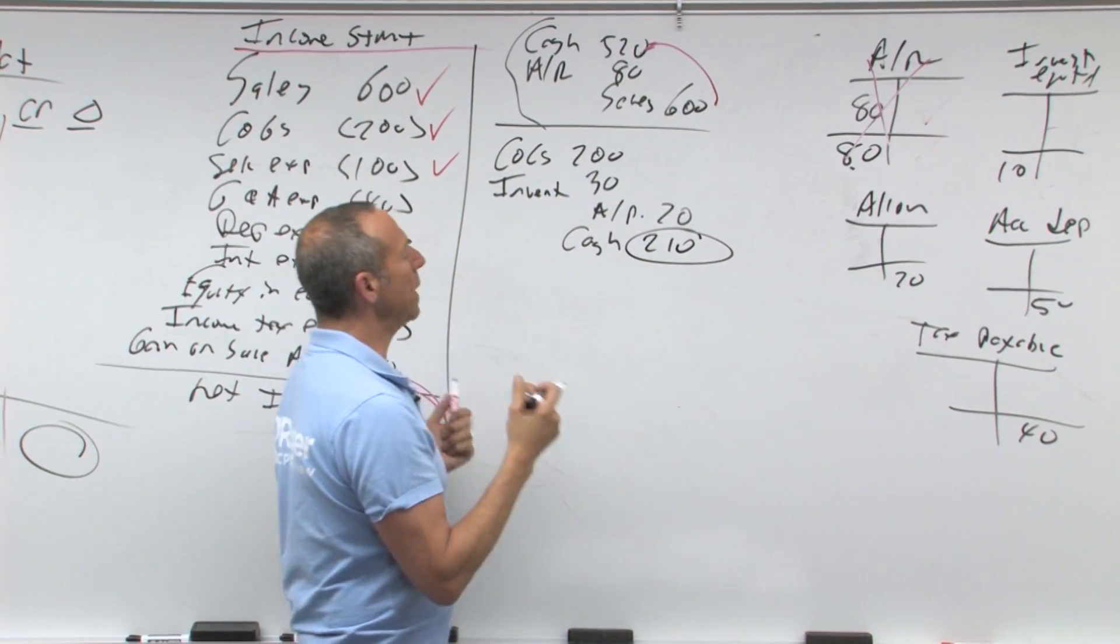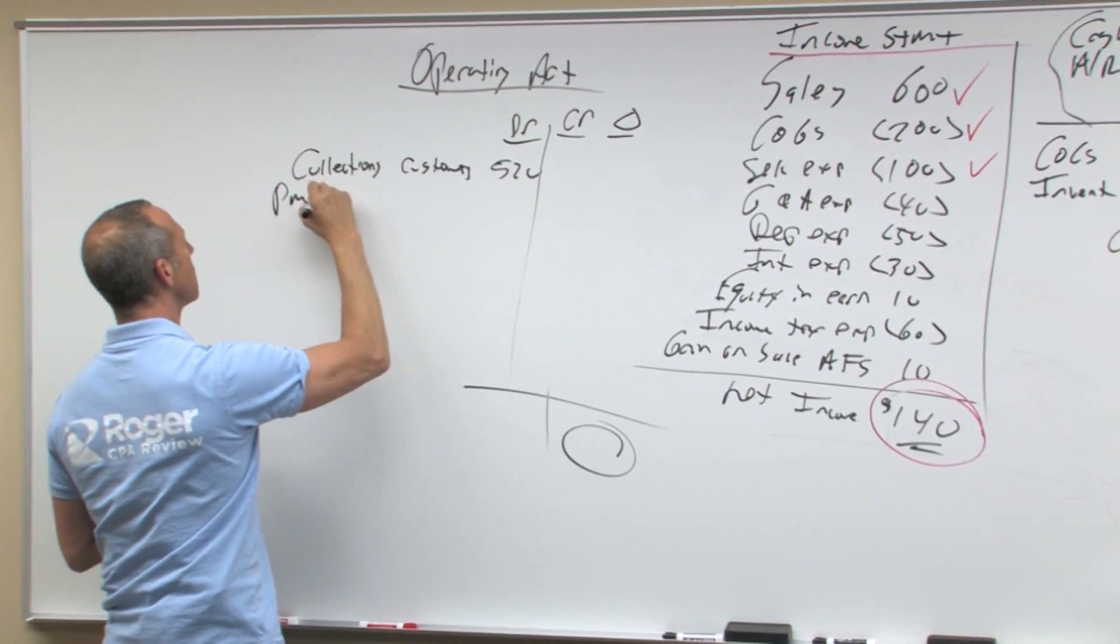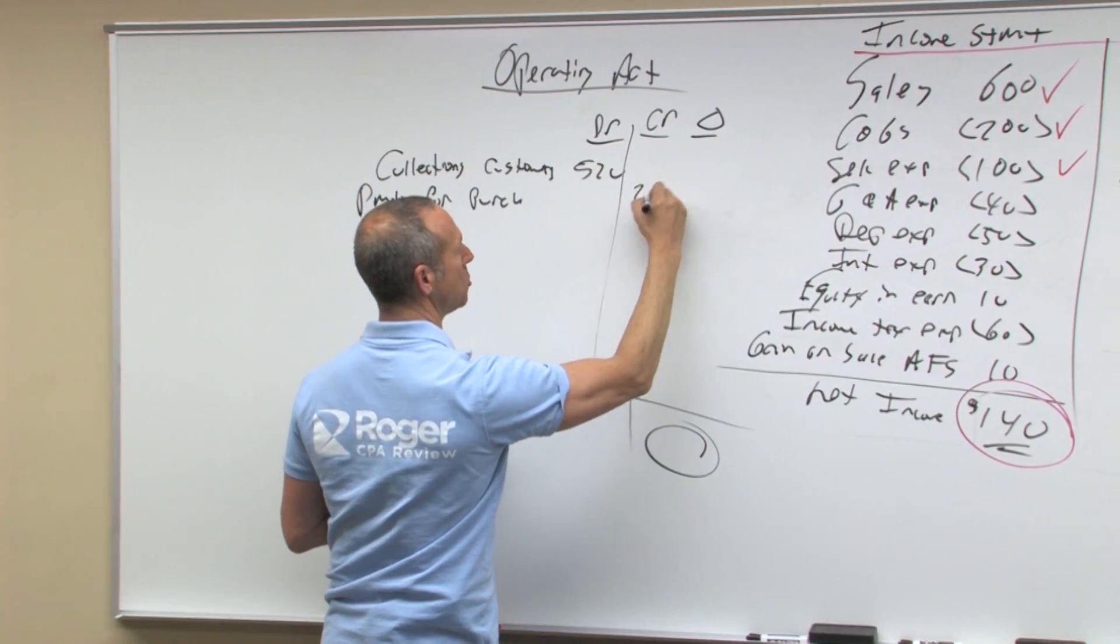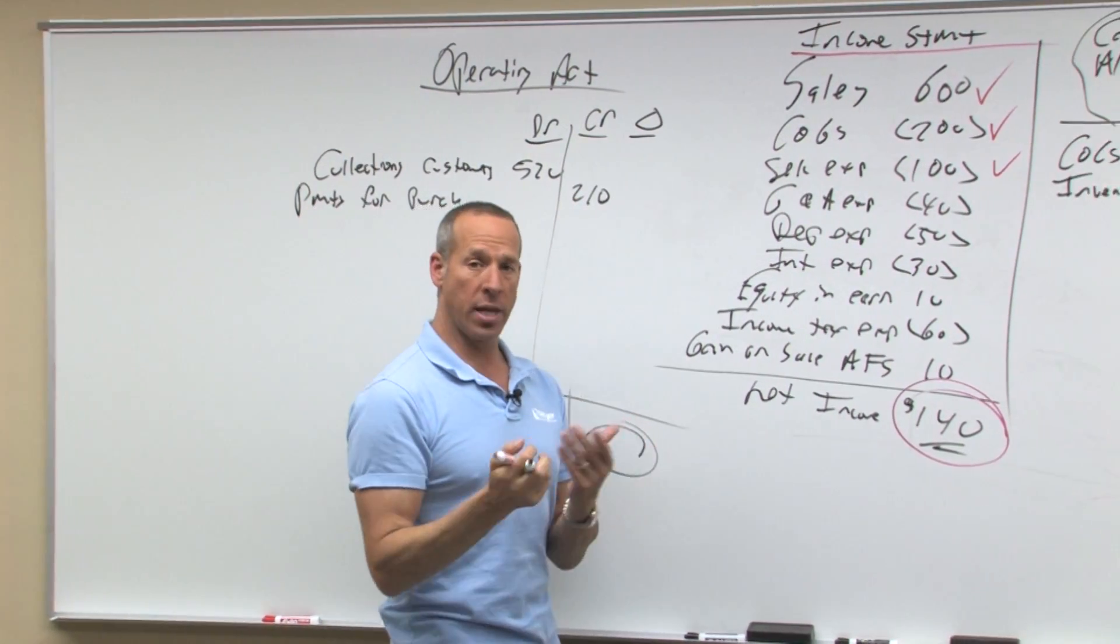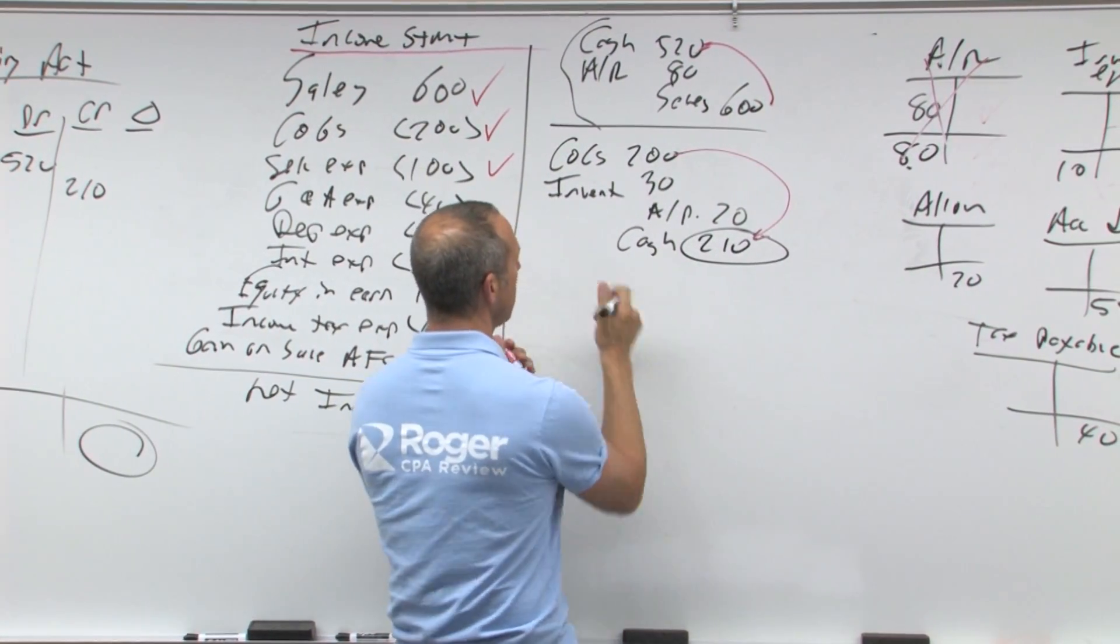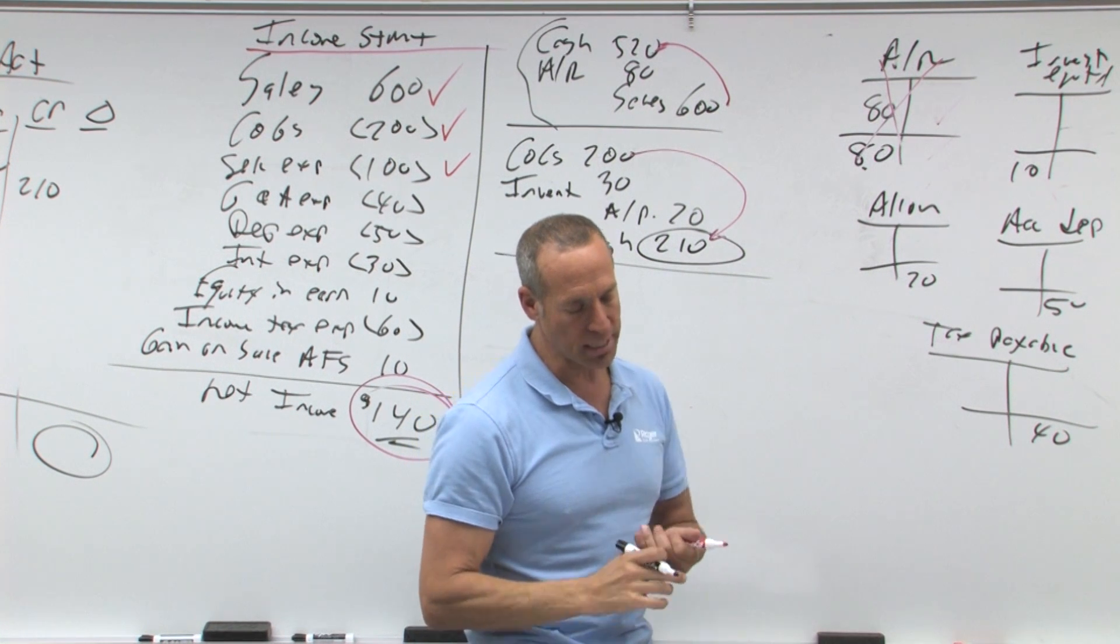So I'll call that payments for purchases. Payments for purchases, credit outflow 210. So again, I'm just trying to convert this is accrual back to cash. And that's what you're going to do throughout the income statement.